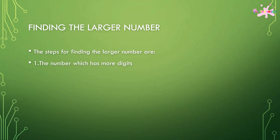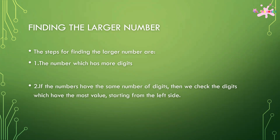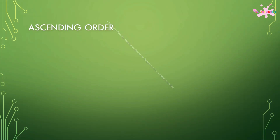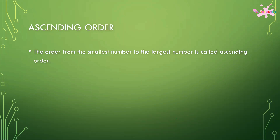Steps for finding the larger number: one, the number which has more digits will be the larger number; two, if the numbers have the same number of digits, then we check the digits which have more value starting from the left side. Ascending order is the order from the smallest number to the largest number. For example, 22, 200, 2,000, and 20,000 are written in ascending order.